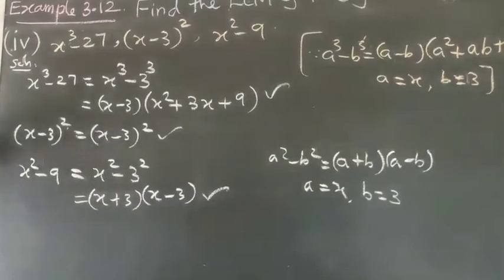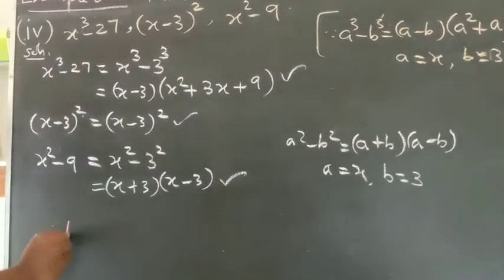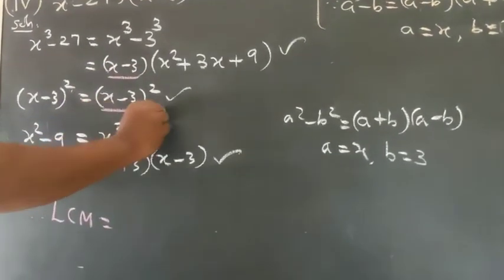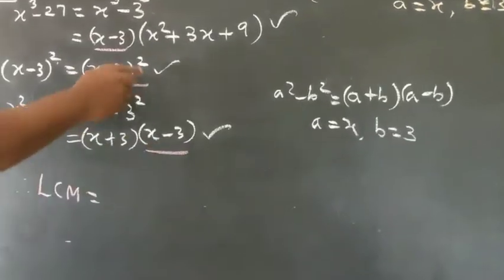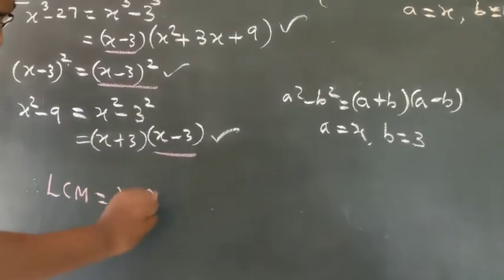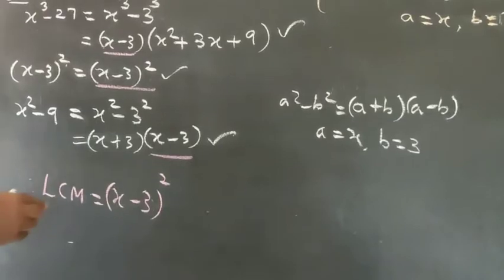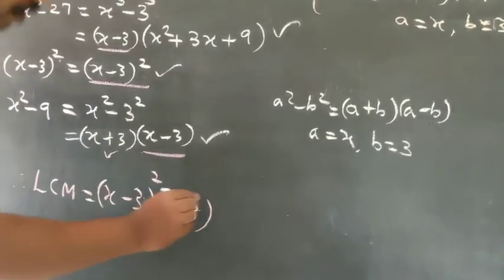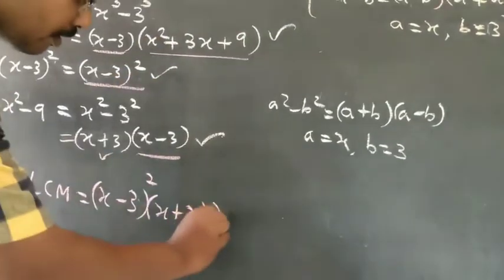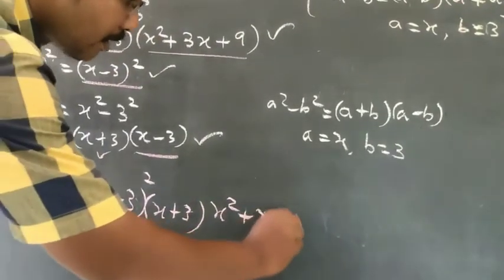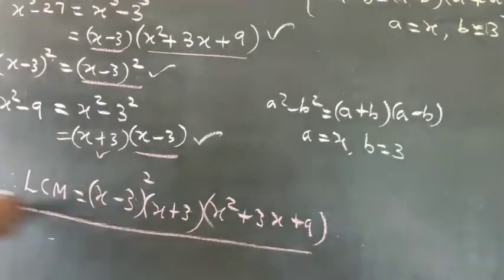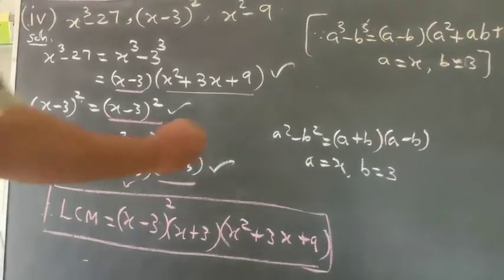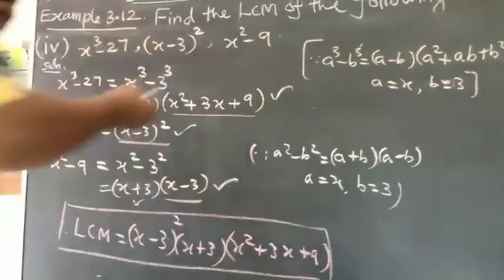Now we have the common terms. Therefore, LCM is equal to: X minus 3 whole squared — taking the highest power for X minus 3 — then the common term X plus 3, and X squared plus 3X plus 9. That is the LCM.